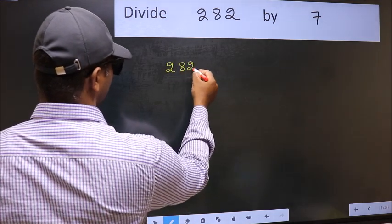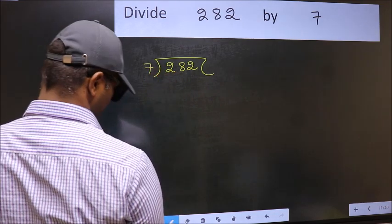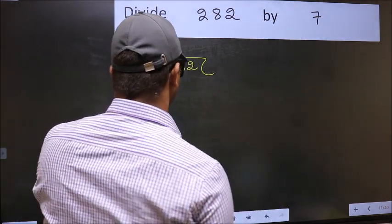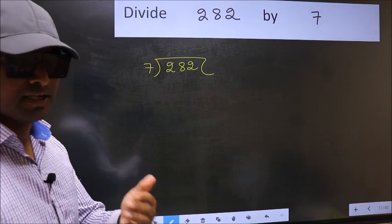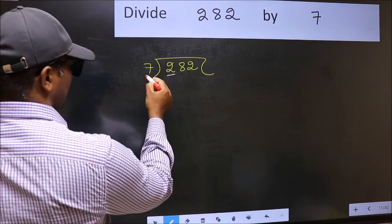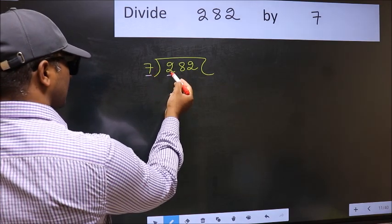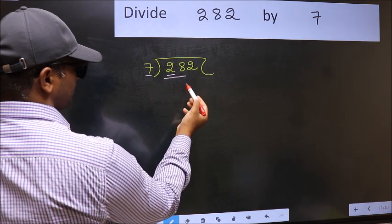282 and 7 here. This is your step 1. Next. Here we have 2 and here 7. 2 is smaller than 7. So we should take 2 numbers, 28.